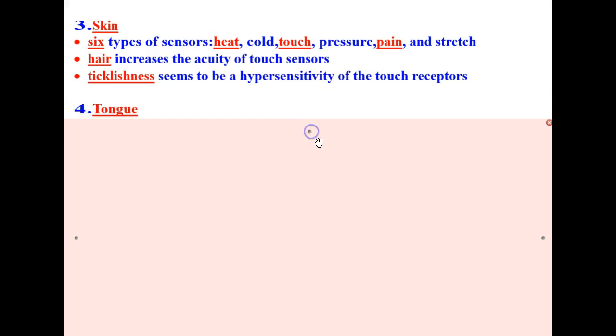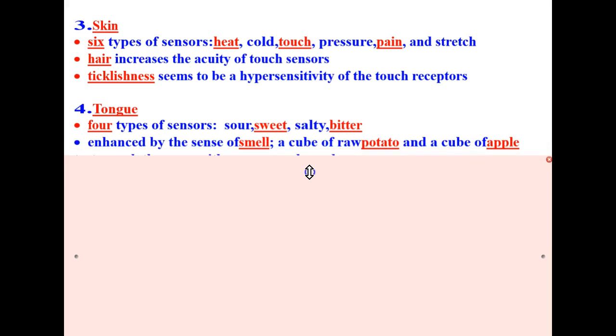Next, let's talk about the sense of taste with the tongue. There are four types of sensors: sour, sweet, salty, and bitter. Your sense of taste is enhanced by the sense of smell. A great experiment to prove that to you is that a cube of raw potato and a cube of apple taste much the same when you plug your nose. So it's the sense of smell that helps you distinguish between eating a potato versus eating an apple.